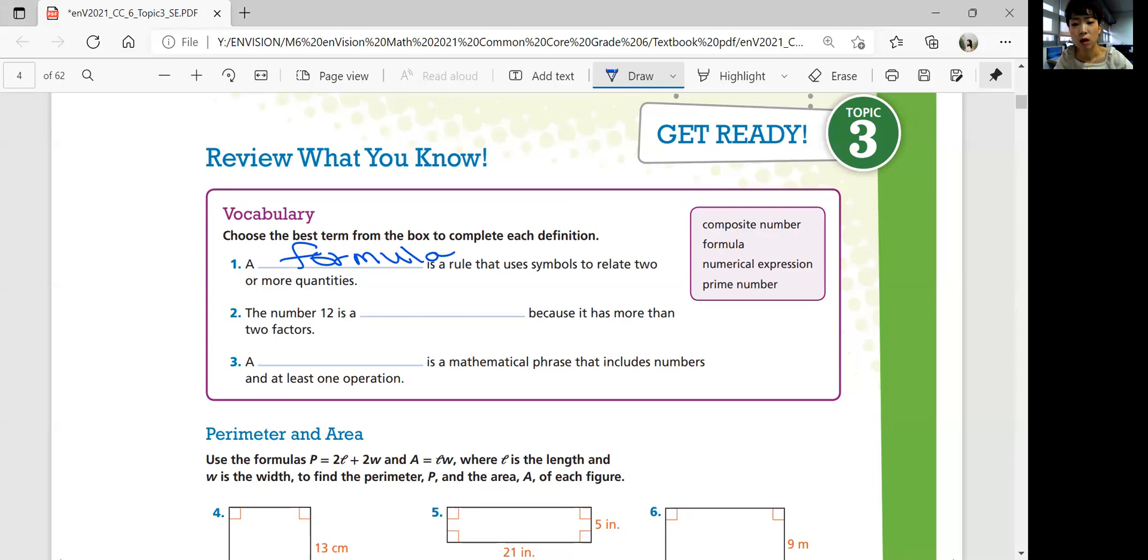A formula is like an equation that uses symbols to relate two or more quantities. Usually you'll look at formulas that have relationships between two or three variables. The number 12 is a blank because it has more than two factors. It's a composite number. Composite means multiple, so if you have multiple numbers, we're talking about more than two factors that will make 12.